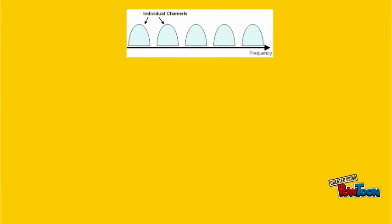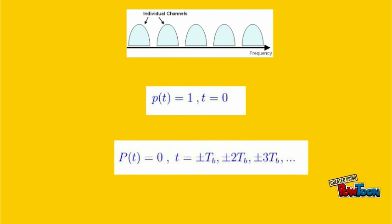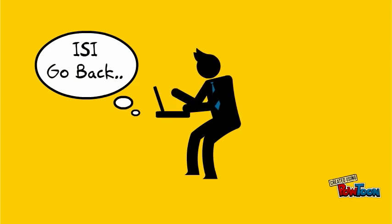And when a pulse is transmitted through a channel with sufficient bandwidth, in order to maintain 0 ISI, it must satisfy the following condition: the pulse should be 1 at sampling instant 0 and should be equal to 0 for all other integral multiples of bit period TB. But how do I practically implement it?